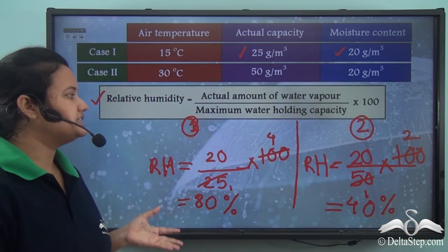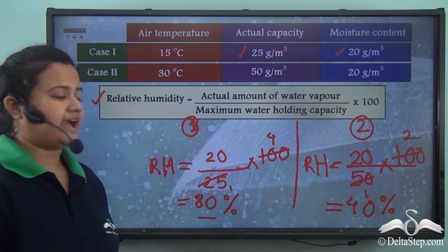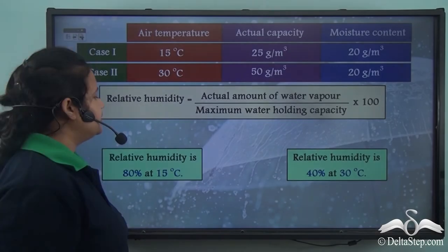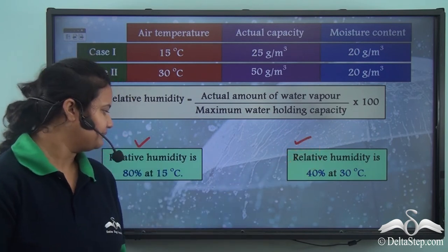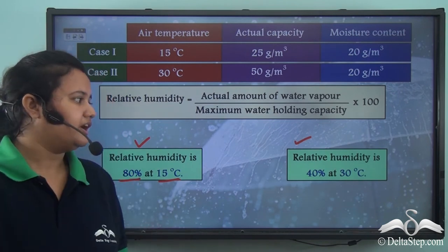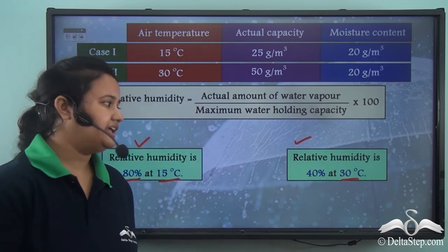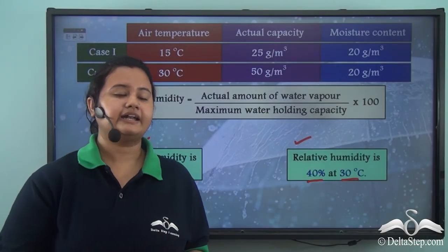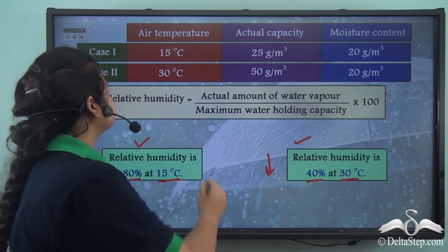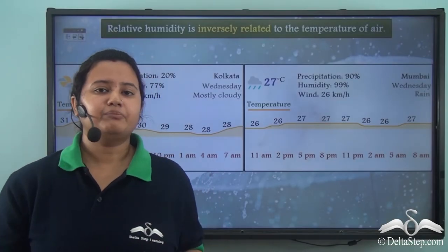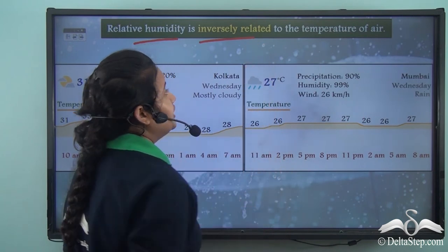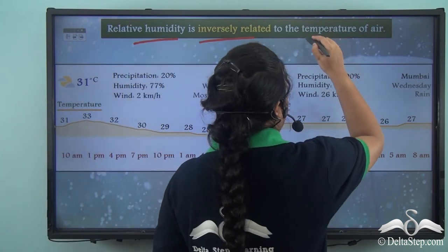So relative humidity in case 1 is 80% and in case 2 it is 40%. At 15°C relative humidity is 80%, while at 30°C it is 40%. As temperature increases, relative humidity falls — confirming that relative humidity is inversely related to air temperature.